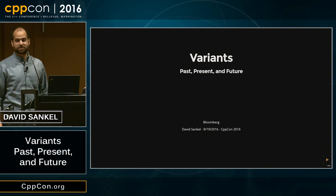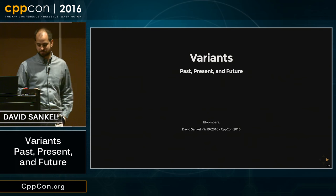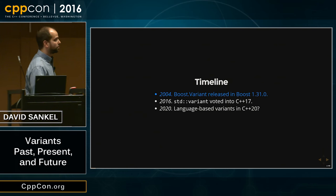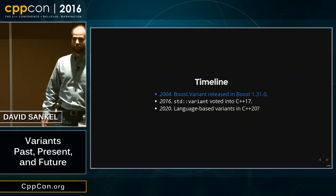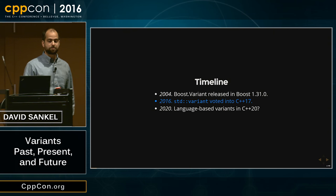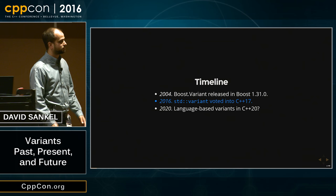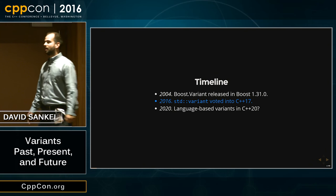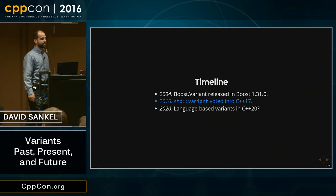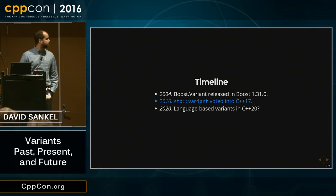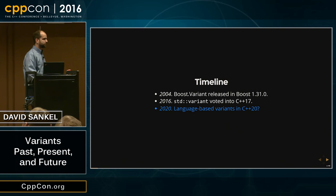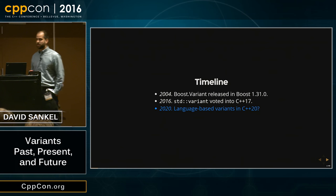This talk is about the past, present, and future of this data structure. In 2004, BoostVariant was released in Boost 1.31.0, and that should tell you we've had a lot of experience with this thing. In 2016, variant was voted into C++17 — that just happened recently, and it was awesome to get into the standard. And sometime in the future, maybe there's going to be language-based variant support in some next revision, and I'll just touch on that at the end.